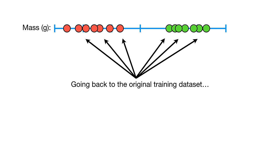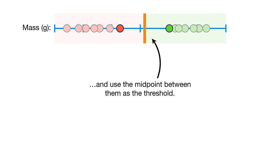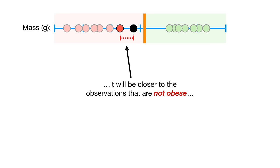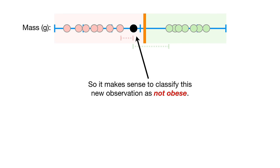Going back to the original training data set, we can focus on the observations on the edges of each cluster and use the midpoint between them as the threshold. Now, when a new observation falls on the left side of the threshold, it will be closer to the observations that are not obese than it is to the obese observations. So it makes sense to classify this new observation as not obese.